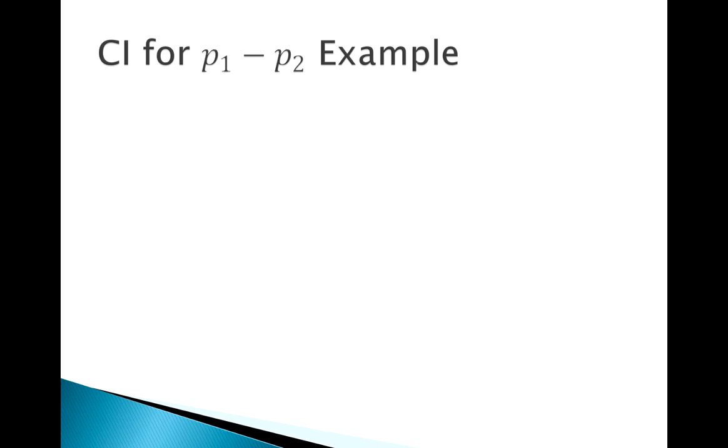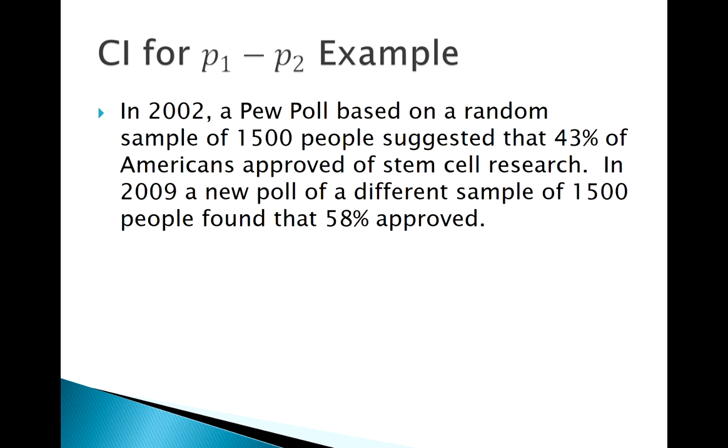Let's look at an example of constructing a confidence interval for the difference in two proportions and then follow up on that idea. Here's our data: how many people approve of stem cell research early in the 2000s and then later in that decade. We've got 43%